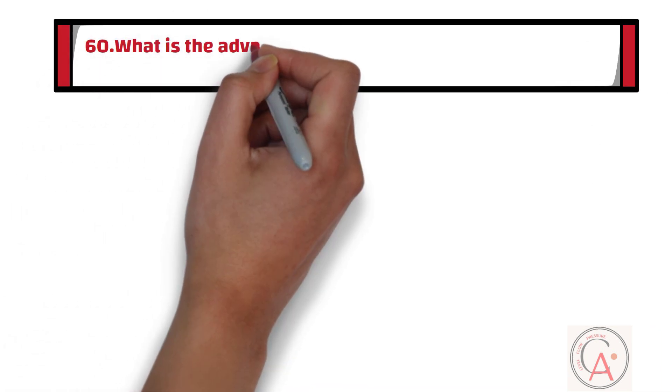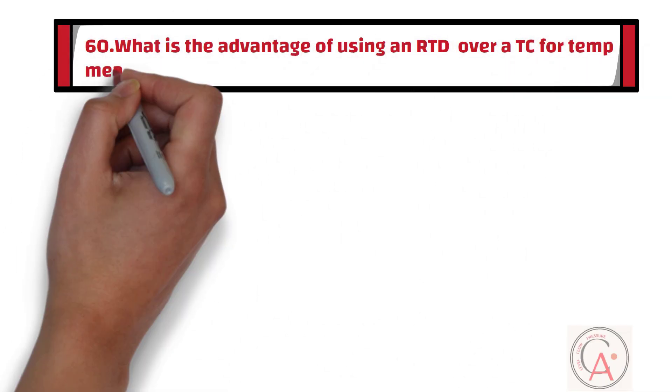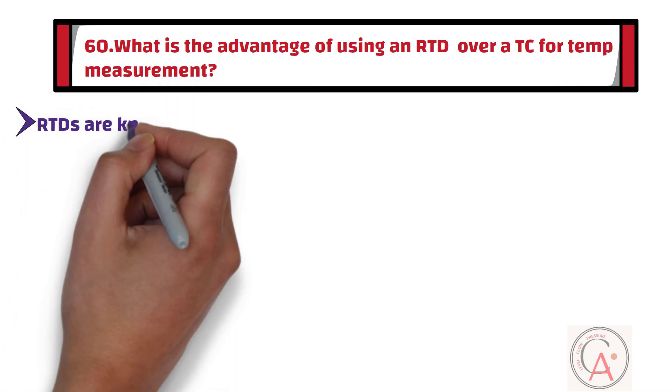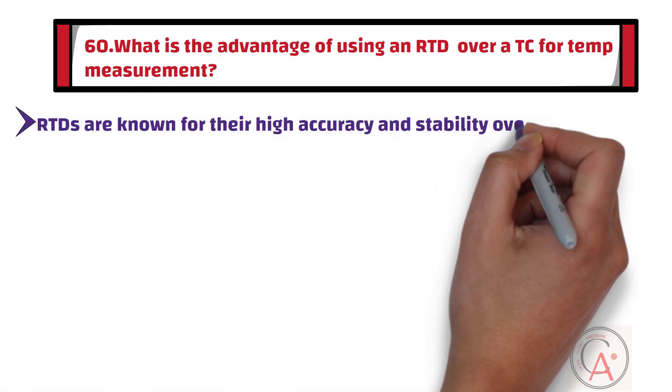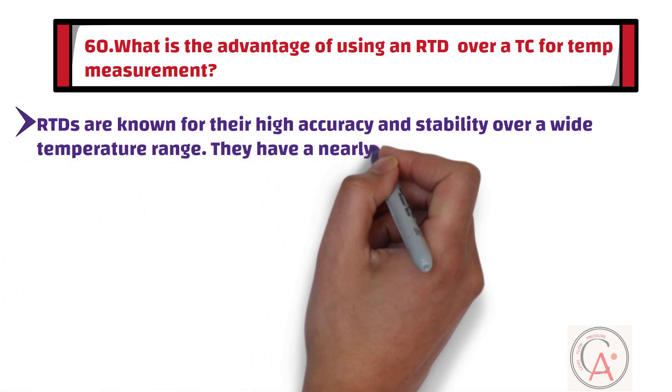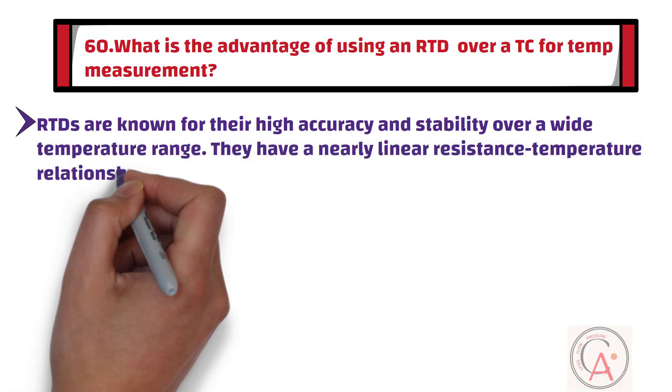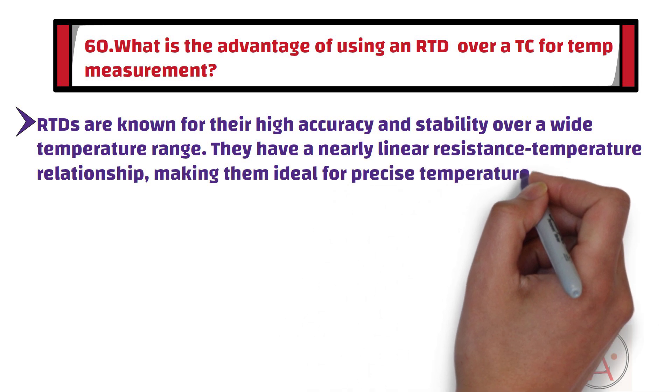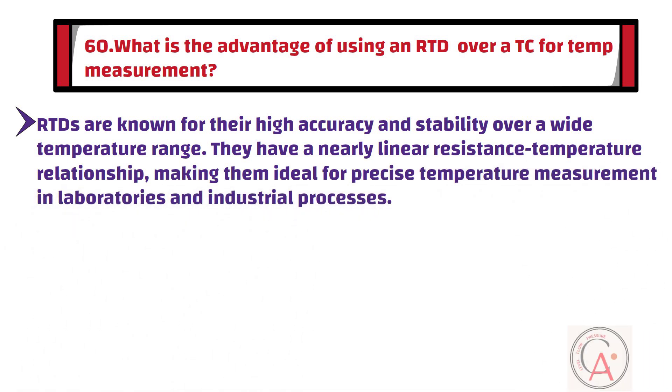Question number 60: What is the advantage of using an RTD over a thermocouple for temperature measurement? RTDs are known for their high accuracy and stability over a wide temperature range. They have a nearly linear resistance temperature relationship, making them ideal for precise temperature measurement in laboratories and industrial processes.